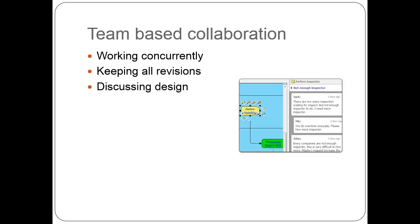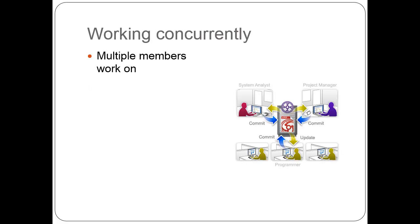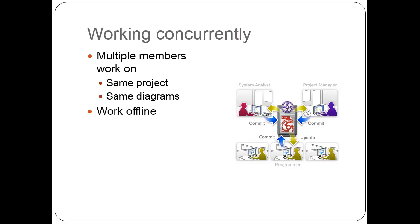Let's go to the first feature: working concurrently. When we're talking about working concurrently, this means multiple members can work on the same projects and even the same diagrams. As long as they are not working on the same elements, the server can help you merge the changes of multiple persons into a new revision. Thanks to Visual Paradigm for UML's offline mode, you can bring your work to clients without connecting back to the server, and after you finish the design, you can go back to the office and commit the change.